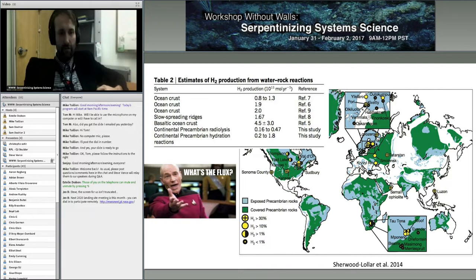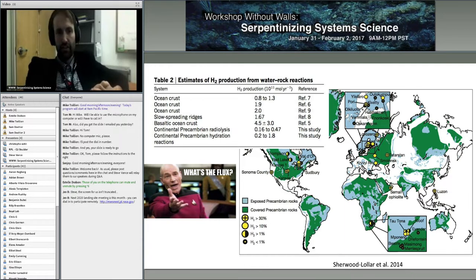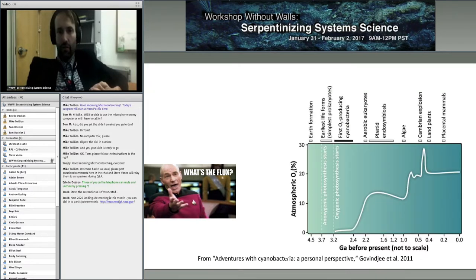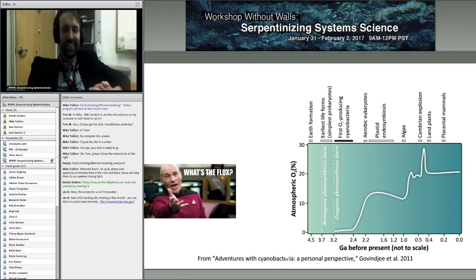We can look at reservoirs such as alteration of oceanic crust, spreading ridges, and peridotite. We can ask what the reservoirs on other worlds are, and importantly, these reservoirs can change with time — Earth's history is complex. The evolution of redox fluxes on Earth has changed through time and is intimately coupled with the evolution of life.